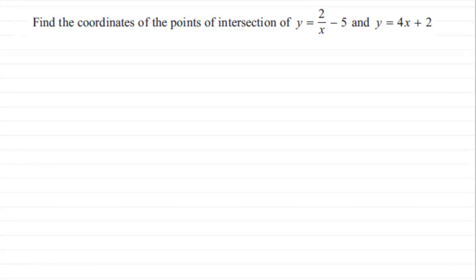So let's see how you would have got on. Well first of all, what I want to do is just write down the two equations of our graphs. y equals 2 over x minus 5 and we've got the other equation y equals 4x plus 2. Now when we're trying to find out points of intersection of two graphs, what we need to do is do simultaneous equations between them.